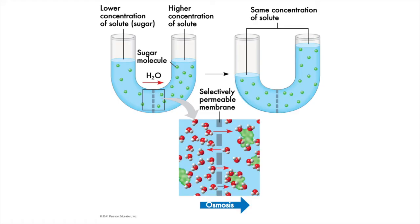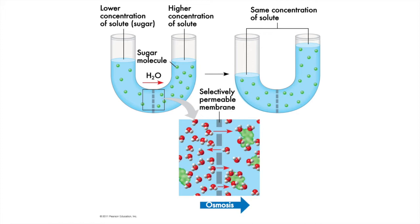The sugar concentration on the left is lower, so the water concentration is higher. The sugar concentration on the right is higher, which means the water concentration on the right is lower. So which way is the water going to move? Diffusion is movement from high concentration to low concentration. The water can move; the sugar cannot. So move the water will — from high water concentration to low water concentration, or from left to right. Water moves into the tube on the right, so you can see that the level has shifted. Osmosis has pushed water into the right side of the tube and against the force of gravity. Osmosis has potential energy.